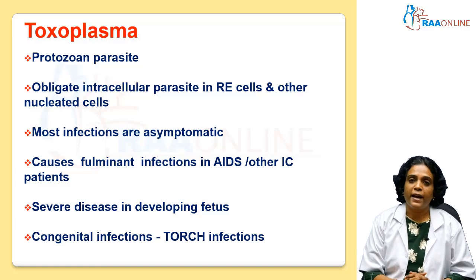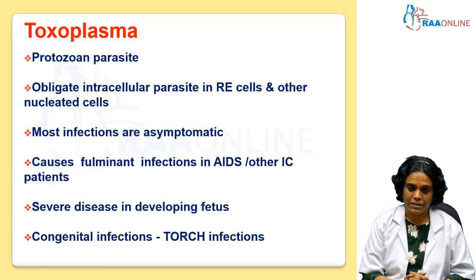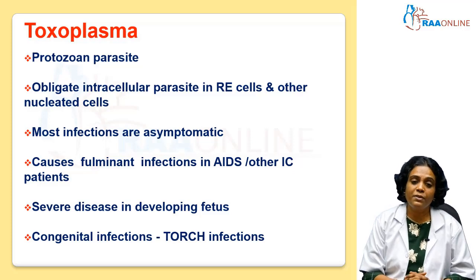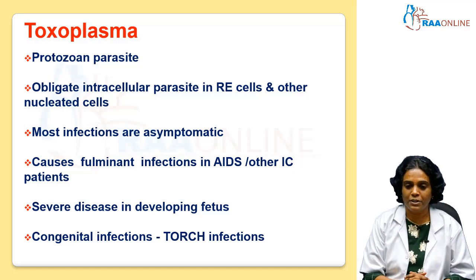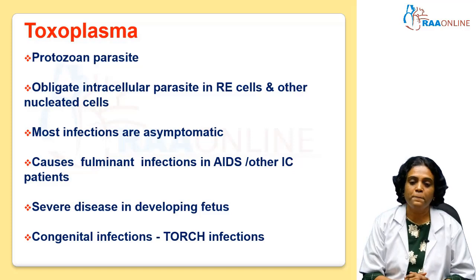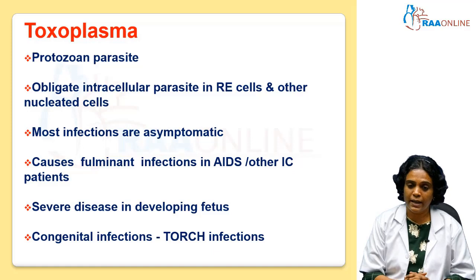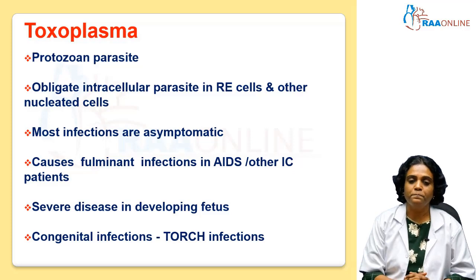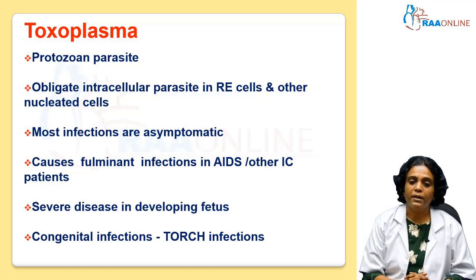It gets manifested as Toxoplasma encephalitis, and it causes severe disease in the developing fetus. It is a common cause of congenital infection if the mother is infected with this particular parasitic infection. We have a panel of tests that helps you to detect whether the mother is infected — the TORCH panel — where we detect Toxoplasma, rubella, cytomegalovirus, and herpesvirus.